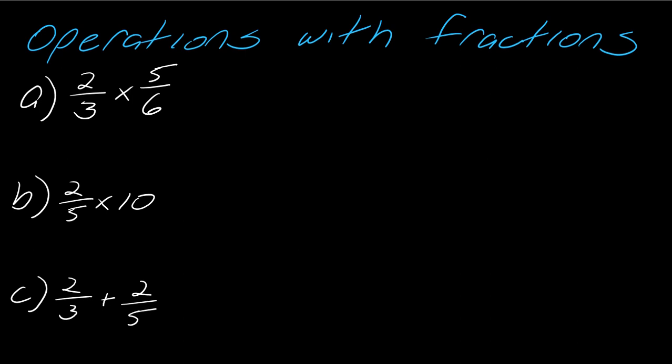Okay, so hopefully you paused the video and tried this. So there's a couple different ways you could have done this. I'm just going to multiply straight across to get 10 over 18. And then I noticed that I can simplify this farther so I can divide the top and bottom by 2. So this becomes 5 over 9.